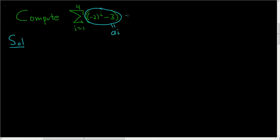And what this notation means is that you first plug in 1, so you get a sub 1, and then you add, and then you plug in 2, so you get a sub 2, and then you add, so you get a sub 3, and then you add, and you finish by plugging in 4, which we call a sub 4. So what we'll do is we'll compute these guys and then add them all up.